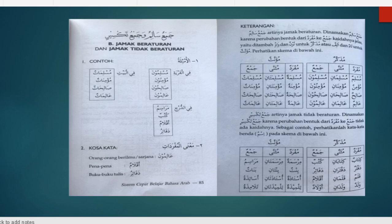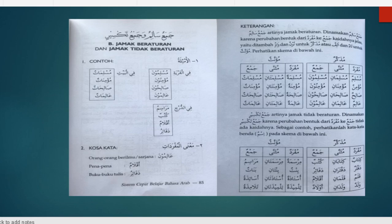Lalu kalau kita mau bilang dua buah buku, maka kita tambahkan di akhir isimnya Ani, menjadi Kitabani. Atau contoh lain, Kalamun itu mufradnya, kemudian kita mau merubah dia jadi dua dengan menambahkan Alif dan Nun, yaitu Kalamani. Contoh lain: Ustadzun menjadi Ustadzani, Ustadzatun menjadi Ustadzatani. Nah itu rumus bagi mutsanna.